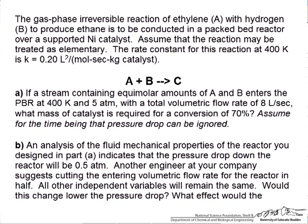Part A asks you to ignore the pressure drop and to basically size the reactor to determine the mass of the nickel-based catalyst that's needed in order to get a conversion of 70% under the given conditions.